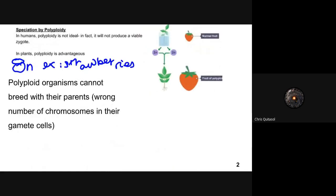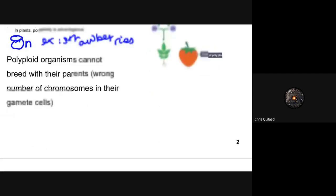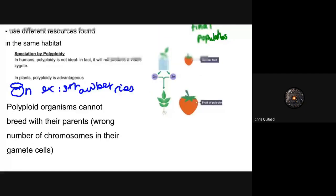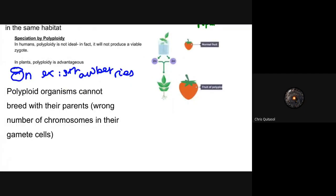The last example is the concept of polyploidy. In humans, polyploidy is not ideal and will not produce a viable zygote. In plants, however, polyploidy is advantageous. Polyploid organisms cannot breed with their parents because they have the wrong number of chromosomes, but they have this unique variability within a population.